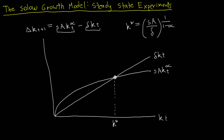What would happen if there was a permanent increase in the savings rate from S to S', where S' is greater than S? Looking at the steady state formula, capital per capita is an increasing function of S — the partial derivative of K* with respect to S is positive. So the new steady state level of capital per capita, K**, would be greater than the old level.